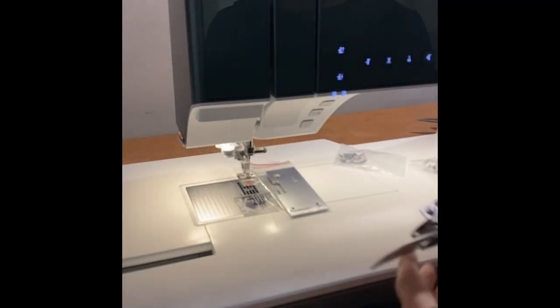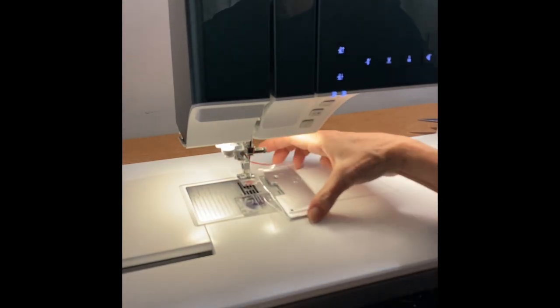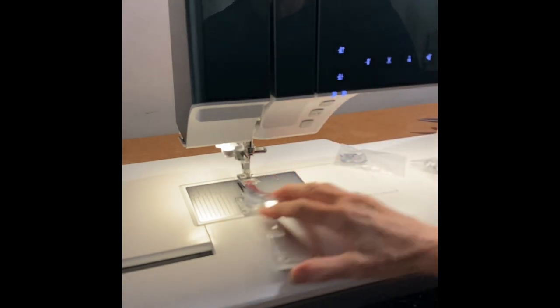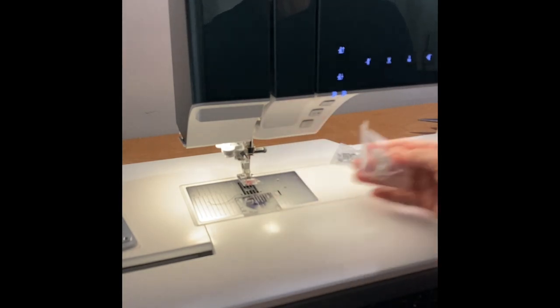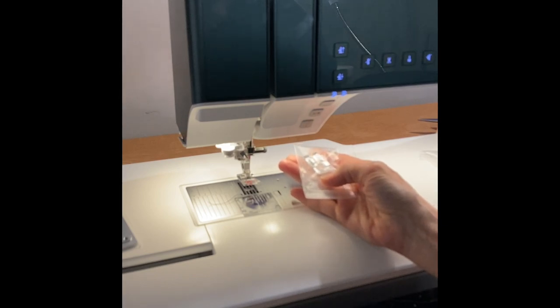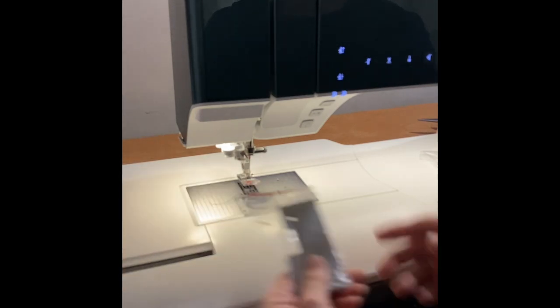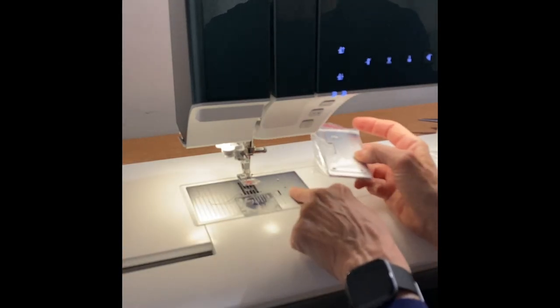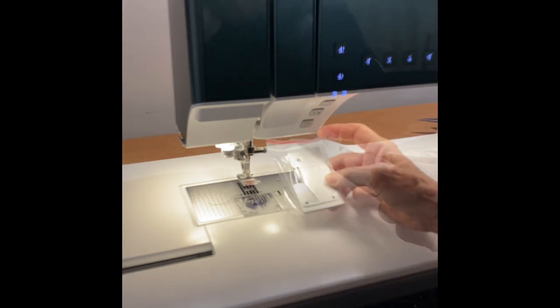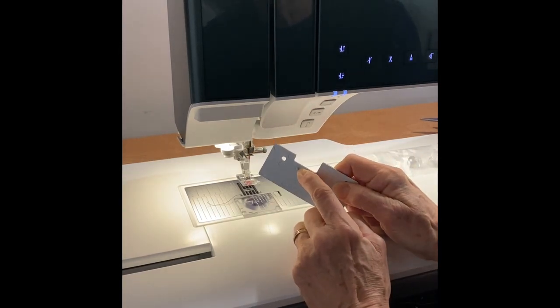The 5/8 inch quilt binder comes with the binder itself, a platform that screws into your plate here in order to stabilize the binder, screws, washers, and a special foot which is the 5/8 inch quilt binder foot for IDT system. The first thing we need to do is get this screwed into the stitch plate, and then the binder attachment screwed into this platform. The platform has a little metal peg on the bottom side that goes into a hole on your needle plate.